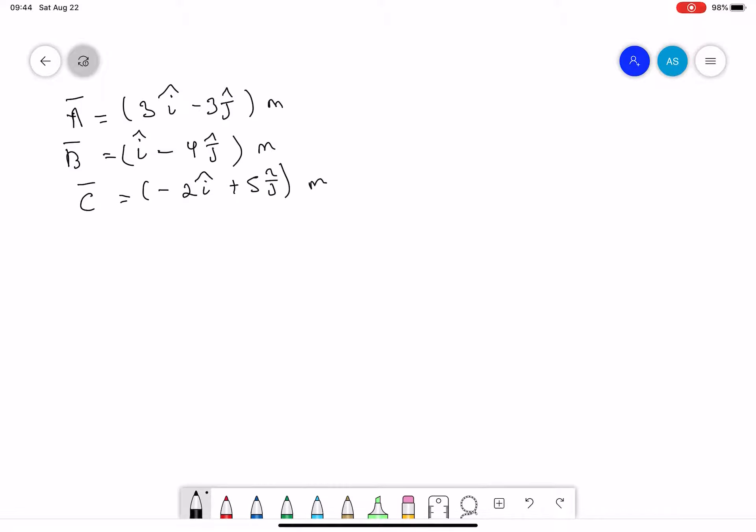So we have to find the D vector. D vector equals A vector plus B vector plus C vector. Now in this case, you just have to add the i vectors to the i vectors and j vectors to the j vectors. So let's write down: 3i minus 3j...